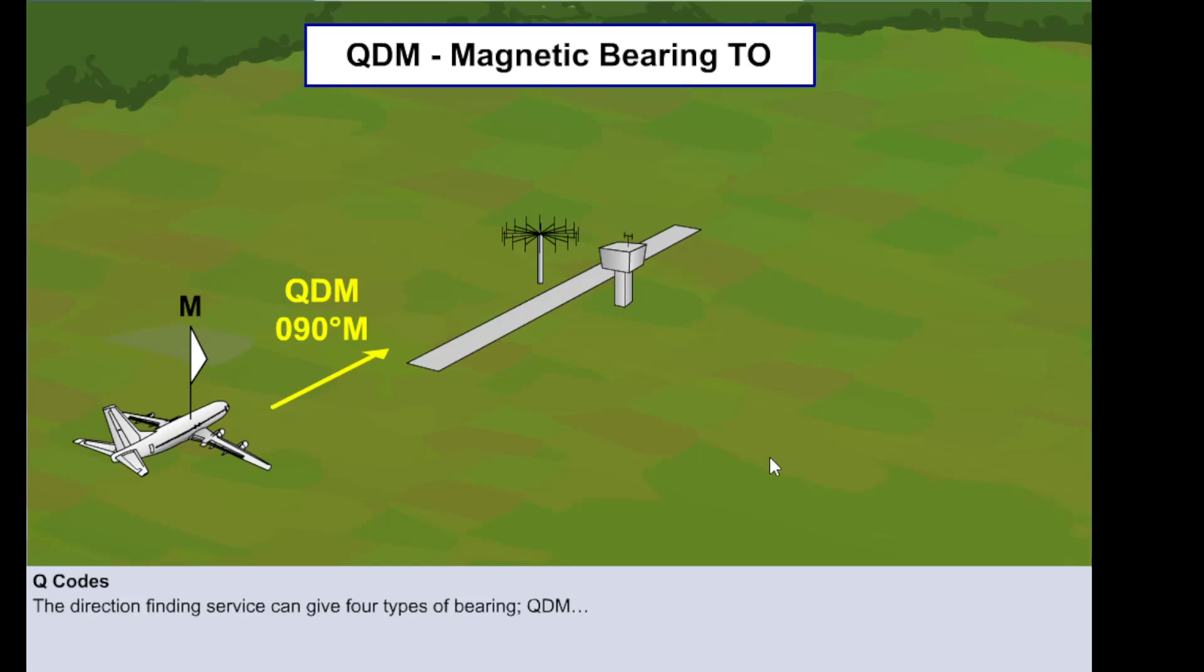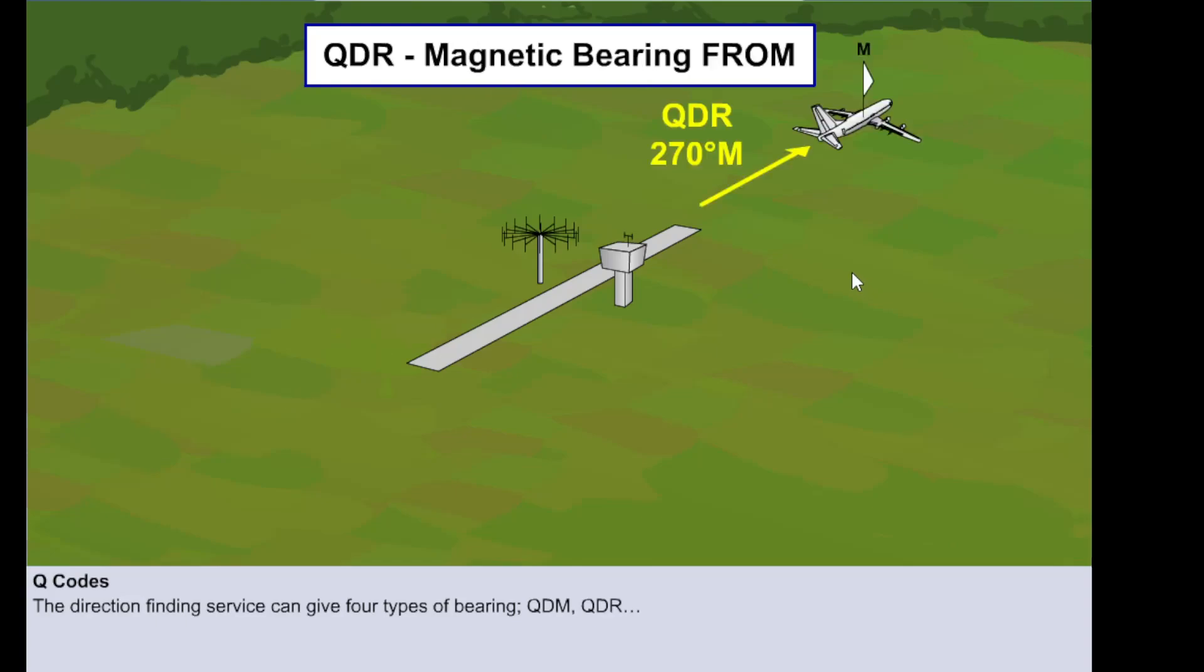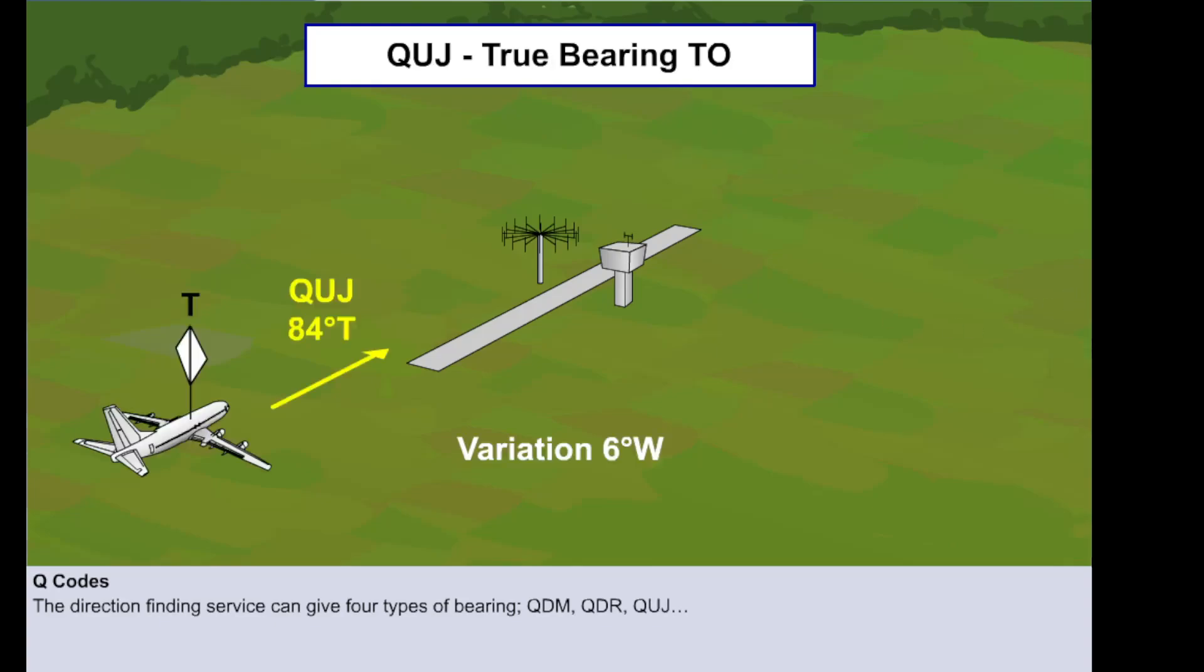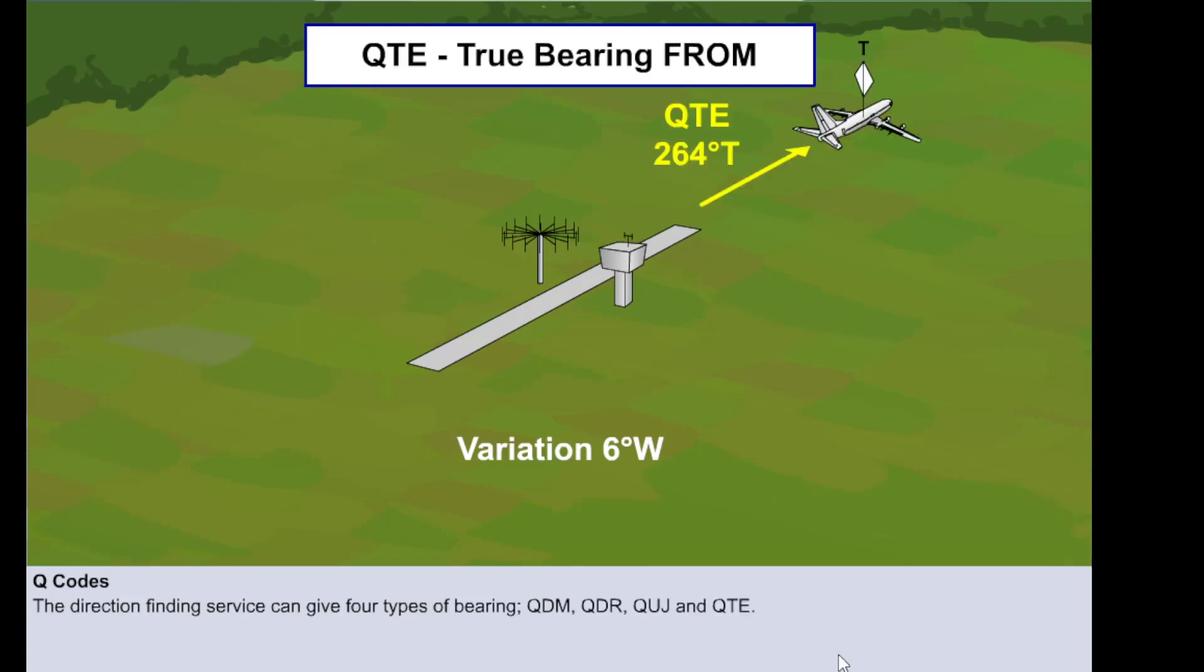Four types of service are provided by the ground station, depending upon the request from the pilot. The services have the following designators: QDM, this gives the magnetic track to the station. QDR, this gives the magnetic bearing from the station. QUJ, this gives the true track to the station. And QTE gives the true bearing from the station.